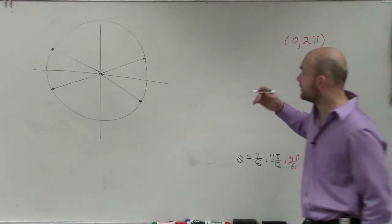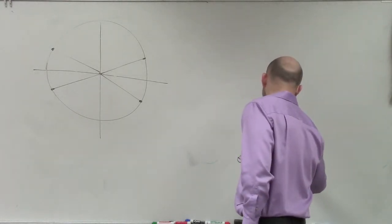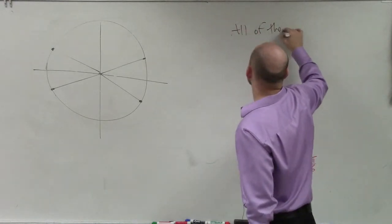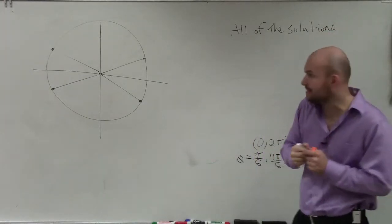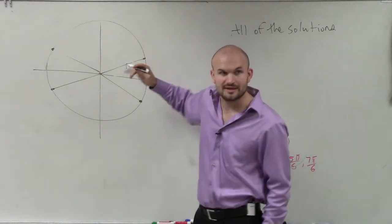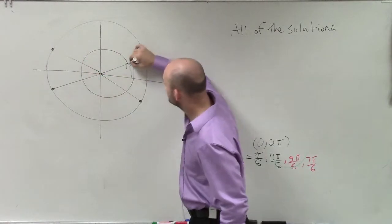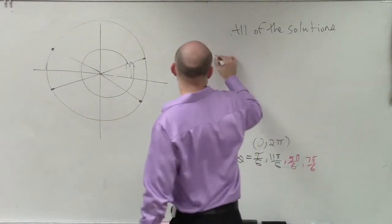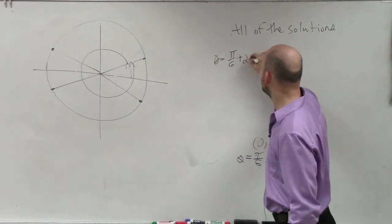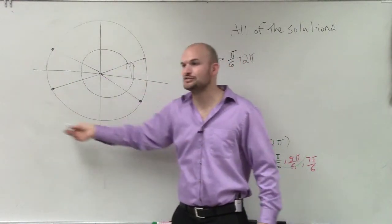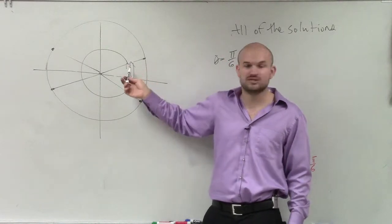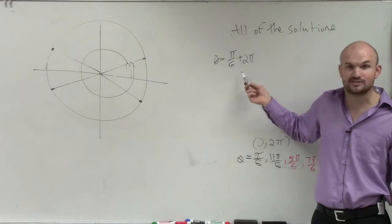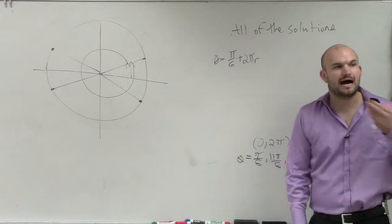We know the graph continues on and on forever. If I ask you to find all of the solutions, what you need to understand is: here's one solution, pi over 6. Can I find the coterminal angle of that? Yes — you can go around, and how many times can you keep on going around? Infinitely many times. So therefore, what I can say is theta equals pi over 6 plus 2 pi, because 2 pi is the distance all the way around the circle. I can keep on adding 2 pi and get back to the exact same angle with the same x-coordinate of square root of 3 over 2. I'll use a variable r to represent how many times I can add it.